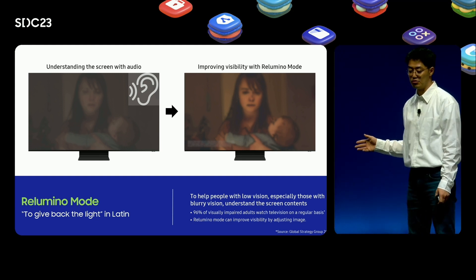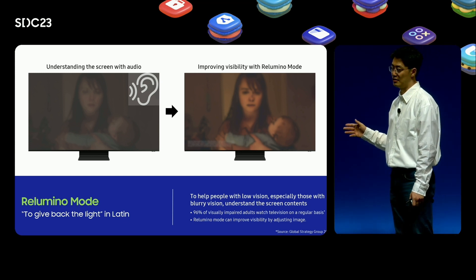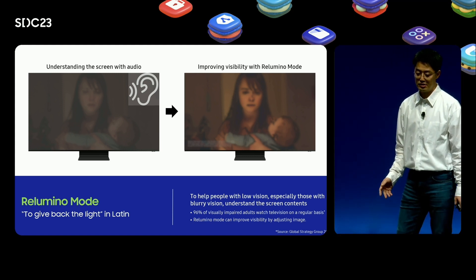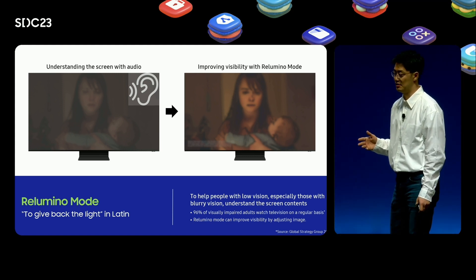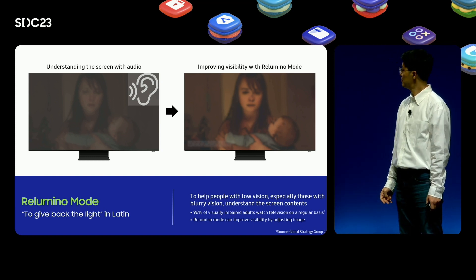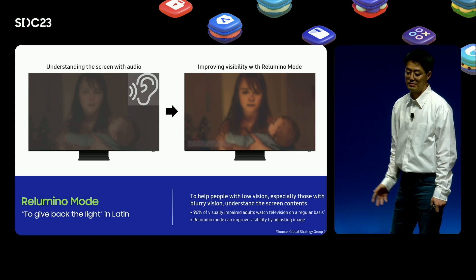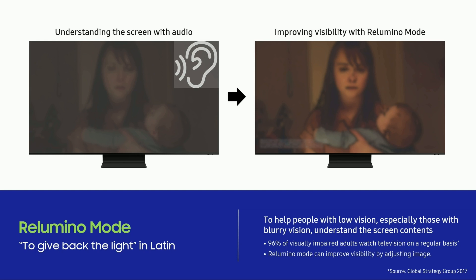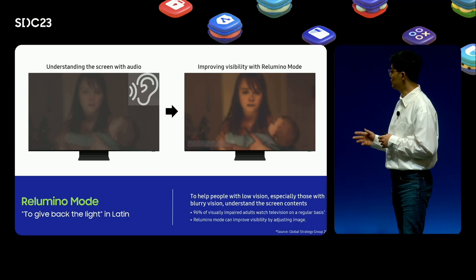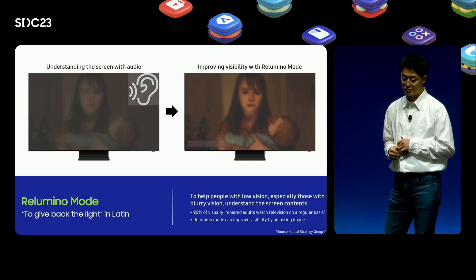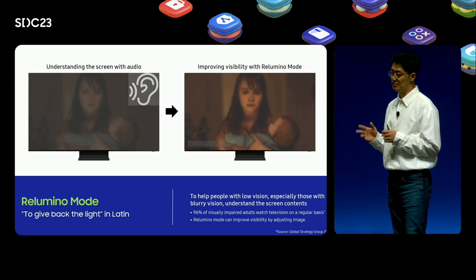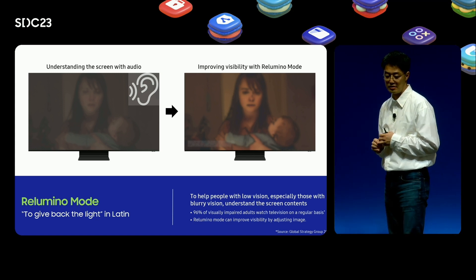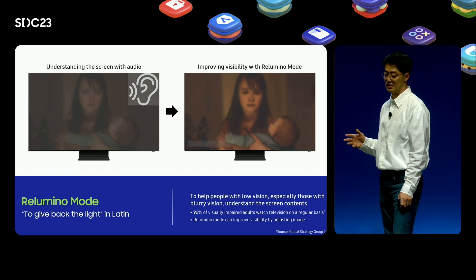The word Rilumino is borrowed from Latin — it means to give back the light. Rilumino mode is designed to expand the viewing experience for people with low vision beyond the traditional method. The picture on the right shows the result after applying Rilumino mode. You may feel that the outlines of the images are too highlighted or the color or brightness is too intense. The main purpose of Rilumino mode is to help people with low vision understand the screen contents, so Rilumino mode can improve visibility of images, not picture quality.